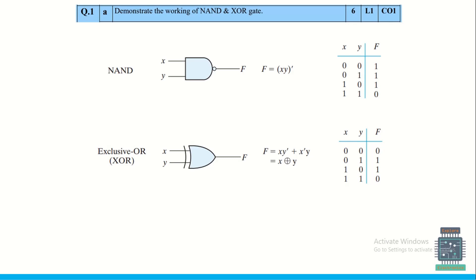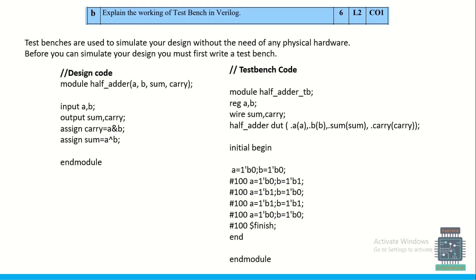Next, explain the working of a test bench in Verilog. Write two or three lines: a test bench is used to give stimulus or input to the design, and we can simulate the design using the test bench code. As an example, I have used half adder functionality written using data flow description.